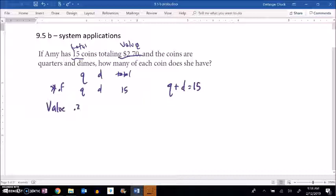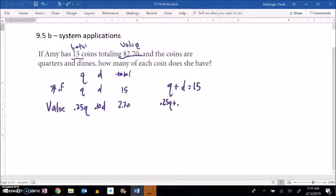Now I also know something about the value. Each quarter is worth 25 cents and each dime is worth 10 cents. So the number of quarters, like if I had 10 quarters I'd go 25 cents times 10, that'd be the value of those coins. Same thing with dimes and if I throw them all together they're worth 270. So there's my other equation, the value equation.